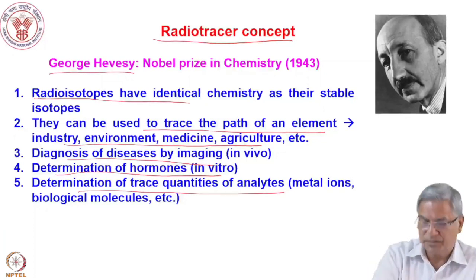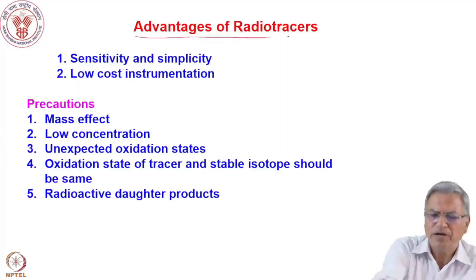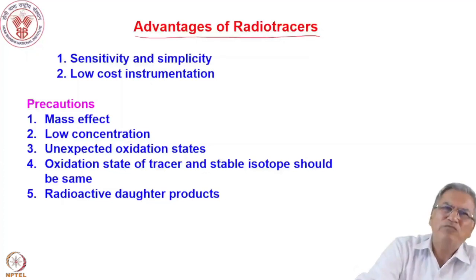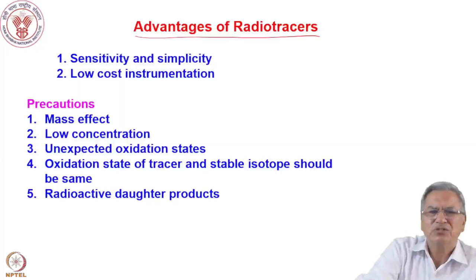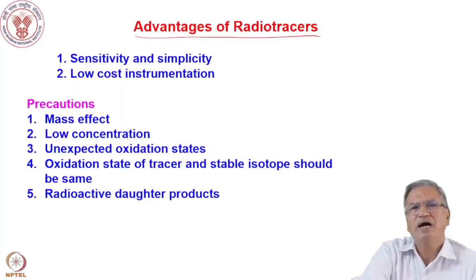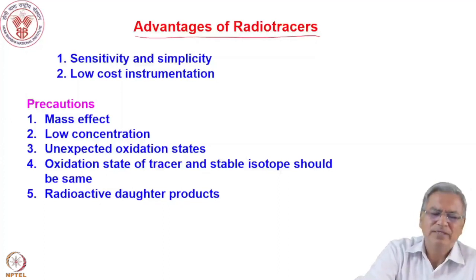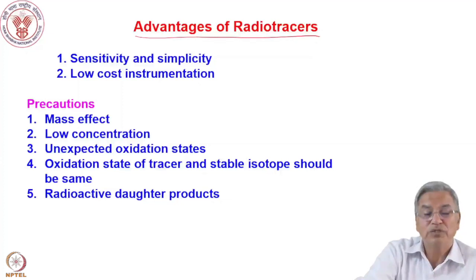You can also do trace element determinations of metal ions and biological molecules using radio tracer techniques. Radio tracers have a lot of advantages, though many have become obsolete as modern non-radioactive techniques have been developed. But sometimes they are indispensable — some experiments can only be done with radio tracers.